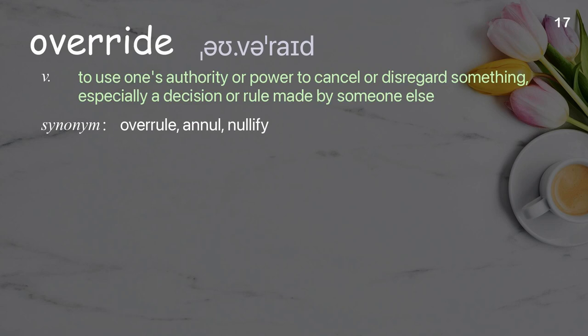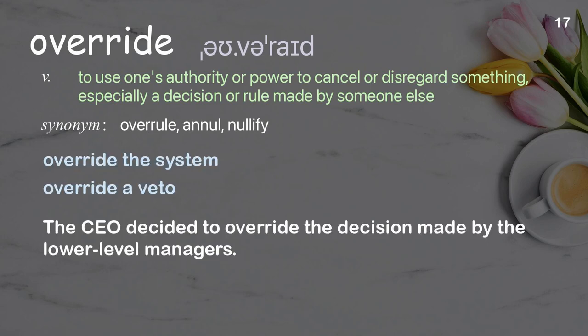Override: to use one's authority or power to cancel or disregard something, especially a decision or rule made by someone else. Examples: override the system, override a veto. The CEO decided to override the decision made by the lower-level managers.